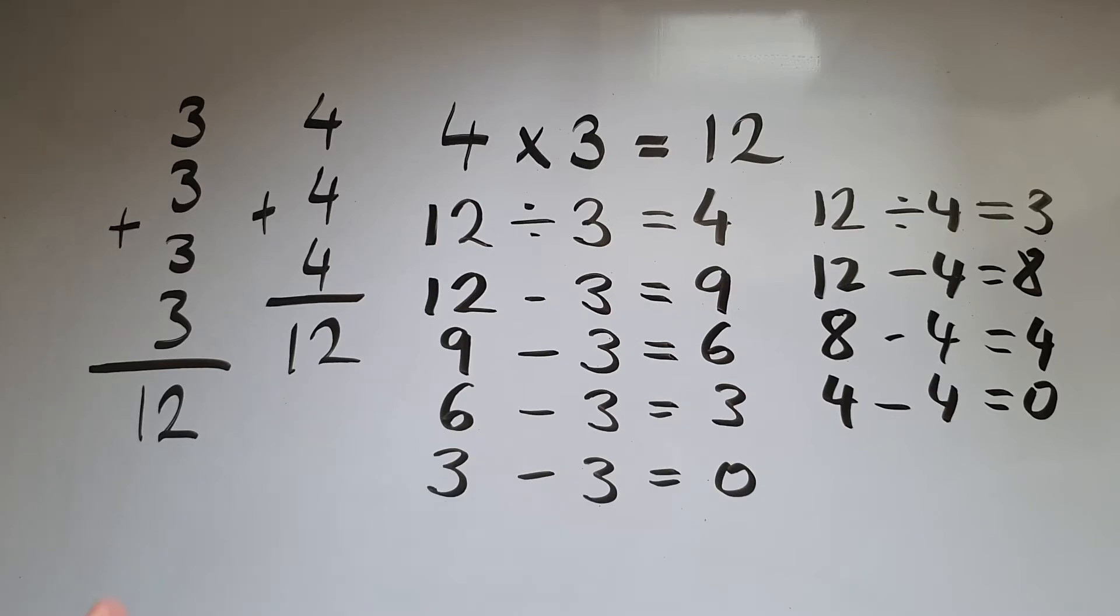One other thing you've probably noticed here is that multiplication and division are inverse operations. So when I've got 4 times a number that is missing equals 12, to find that number what I can do is 12 divided by 4.